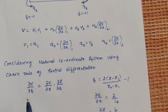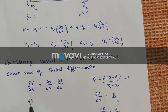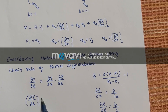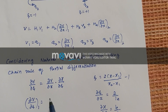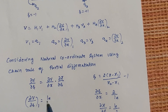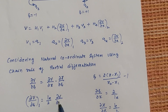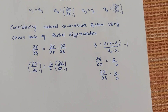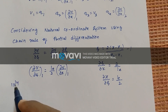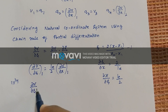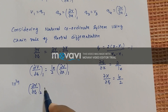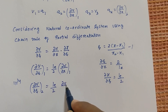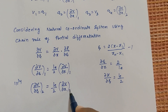Now this equation can be simplified. In the natural coordinate system at node 1, dV/dζ can be written as LE over 2 into dV/dX at node 1. Similarly, dV/dζ in natural coordinate system at node 2 can be written as LE over 2 into dV/dX at node 2.